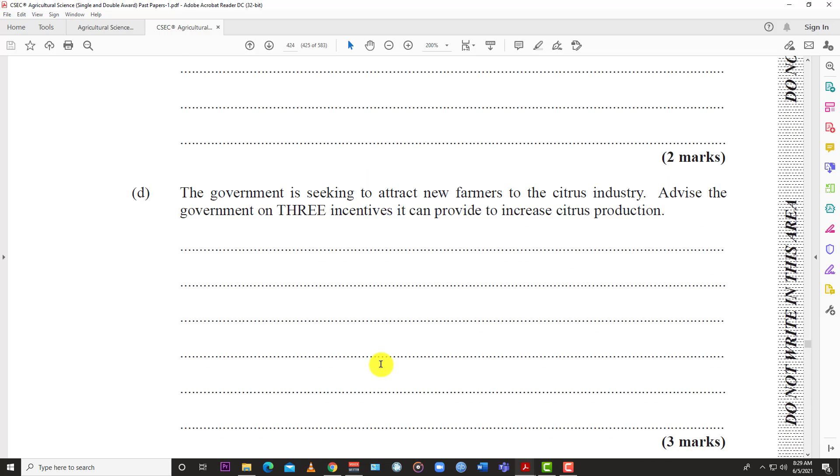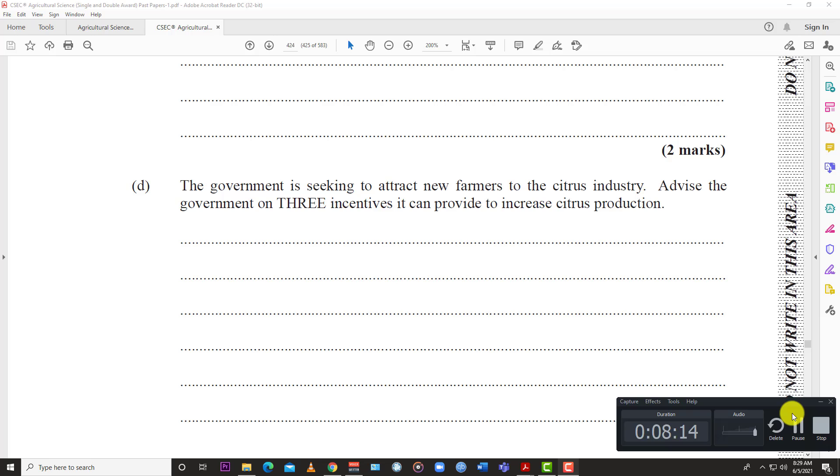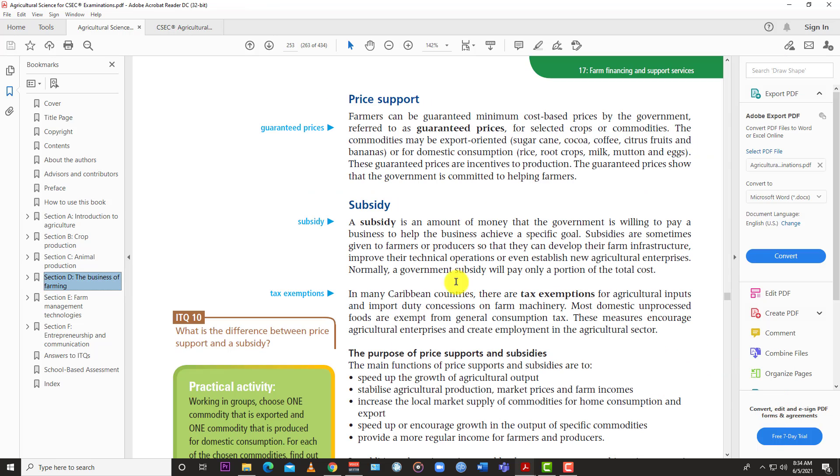The last one here, three marks. The government is seeking to attract new farmers to the citrus industry. Advise the government on three incentives it can provide to increase citrus production. There are a number of incentives that a government can offer to farmers to encourage them to produce. You have what you call price guarantees in form of price support, you have subsidies, you have tax exemptions. Those are parts of subsidies. Let's see how this works.